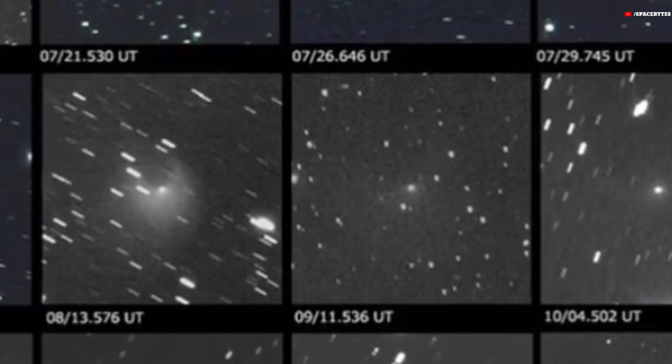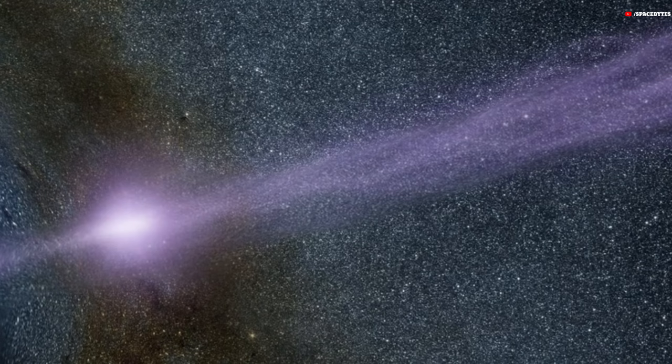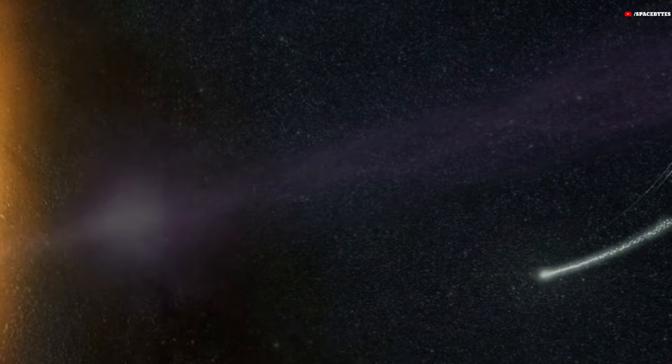The comet has also been described as Halley-like, a term Miles said was coined a few decades ago to describe comets in long elliptical orbits around the sun where it takes the comet between 20 and 200 years to go around once.